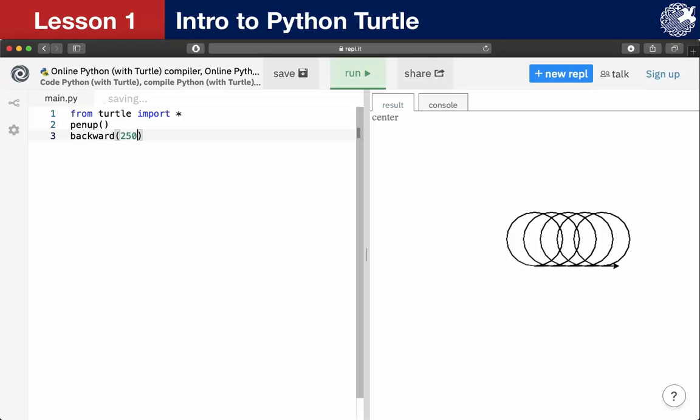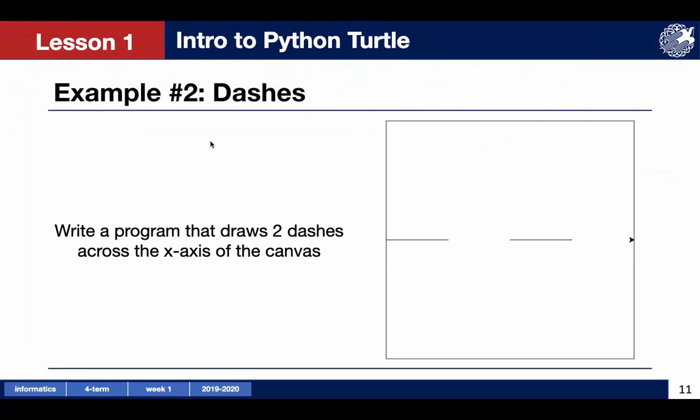Let's check our code. As you can see, now our turtle is at the left side of the x-axis. Like we can notice, we have two dashes and two spaces. Both of them have the same length along the x-axis. Like we already discussed, our canvas has a width of 500 pixels. It means we must divide 500 by 4, and as a result we will have 125.